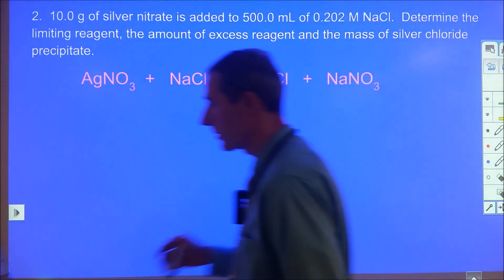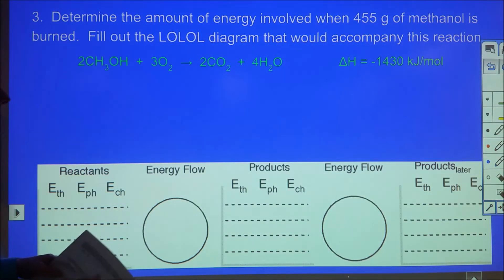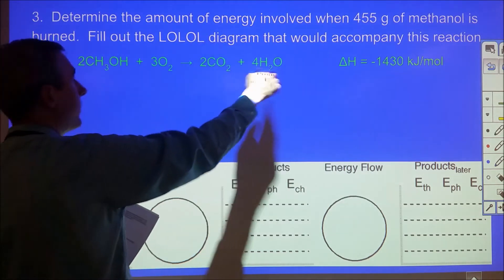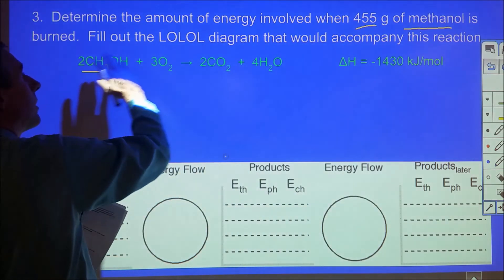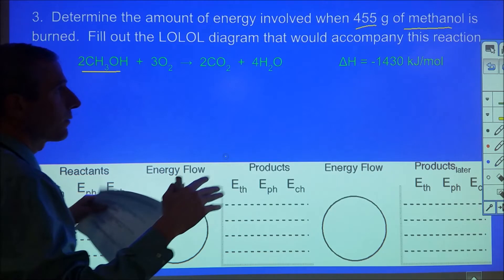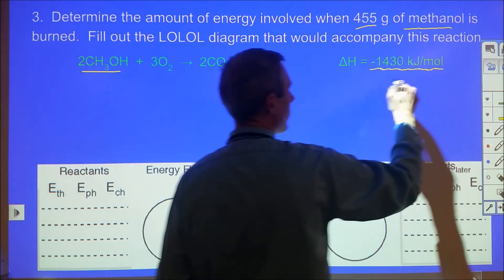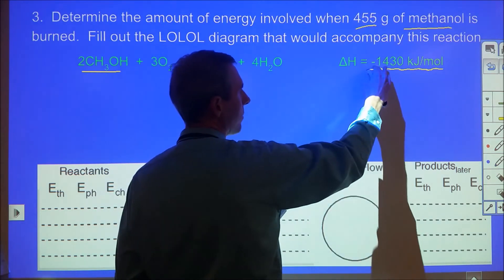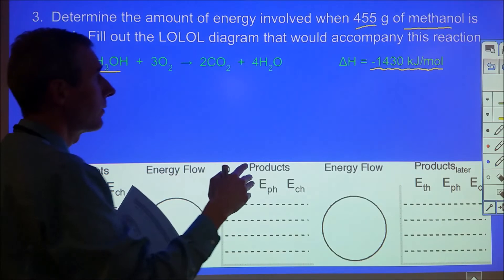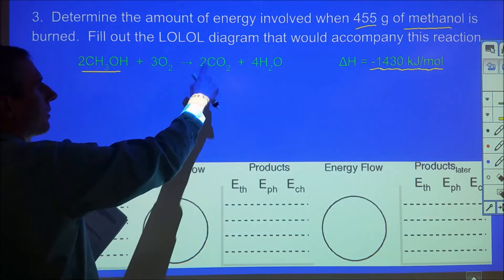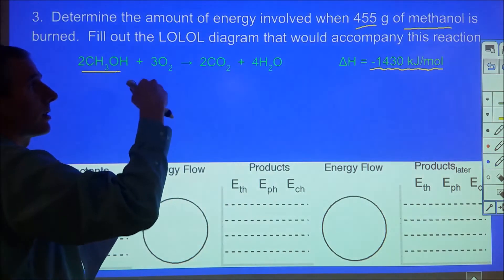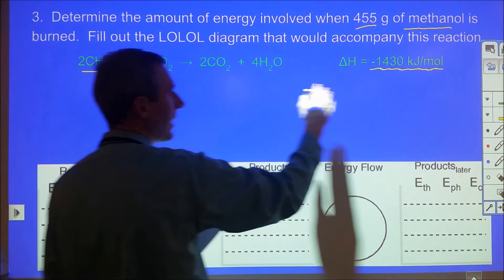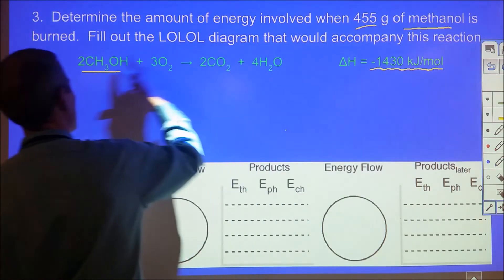Let's look at different examples beyond solution chemistry. Here it says determine the amount of energy involved when 455 grams of methanol is burned, and fill out the LOL diagram. The key is understanding what this enthalpy change represents: when two moles of methanol and three moles of oxygen react to form two moles of CO2 and four moles of water, the total chemical energy drops by 1430 kilojoules.